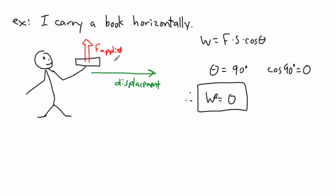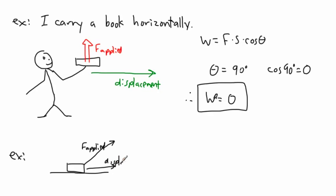Of course, there can be something in the middle. If you pull an object along the ground with a string at some angle, with the applied force going upward at an angle and the displacement along the ground, then it all depends on what that angle theta is between the applied force and the displacement. The work done will be some non-zero value depending on the angle.